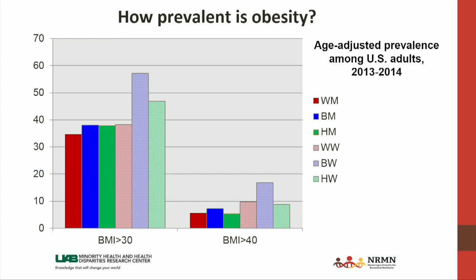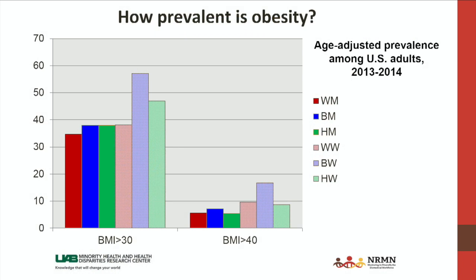That's BMI across all categories — BMI greater than 30. When you look at more extreme, more severe levels of obesity — a BMI of 40 or greater — you again see some disparities. Men have a somewhat lower rate of class 3 obesity compared to women. And again, you see racial differences, with African American women in particular seeming to be at greater risk for the more severe levels of obesity.